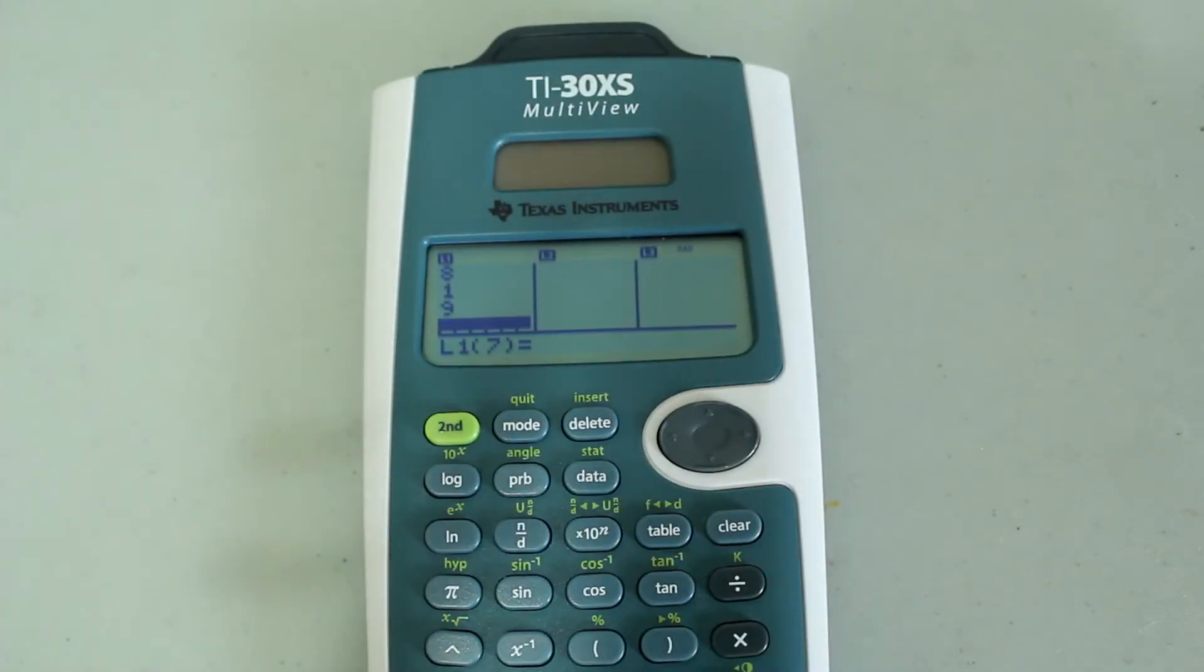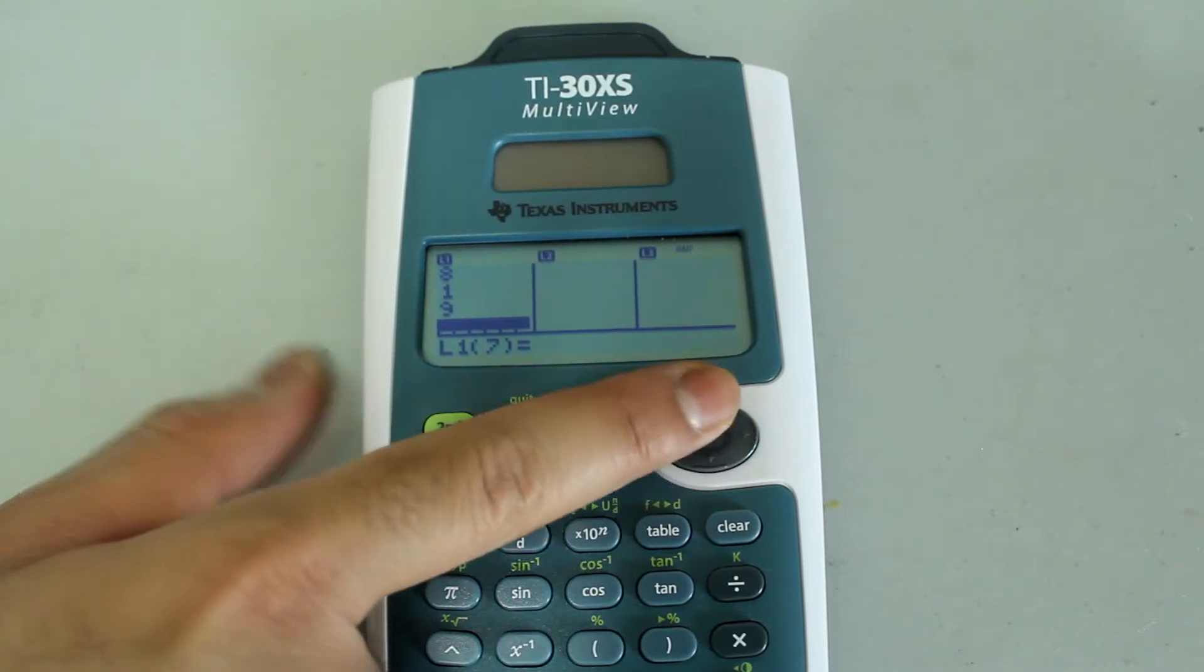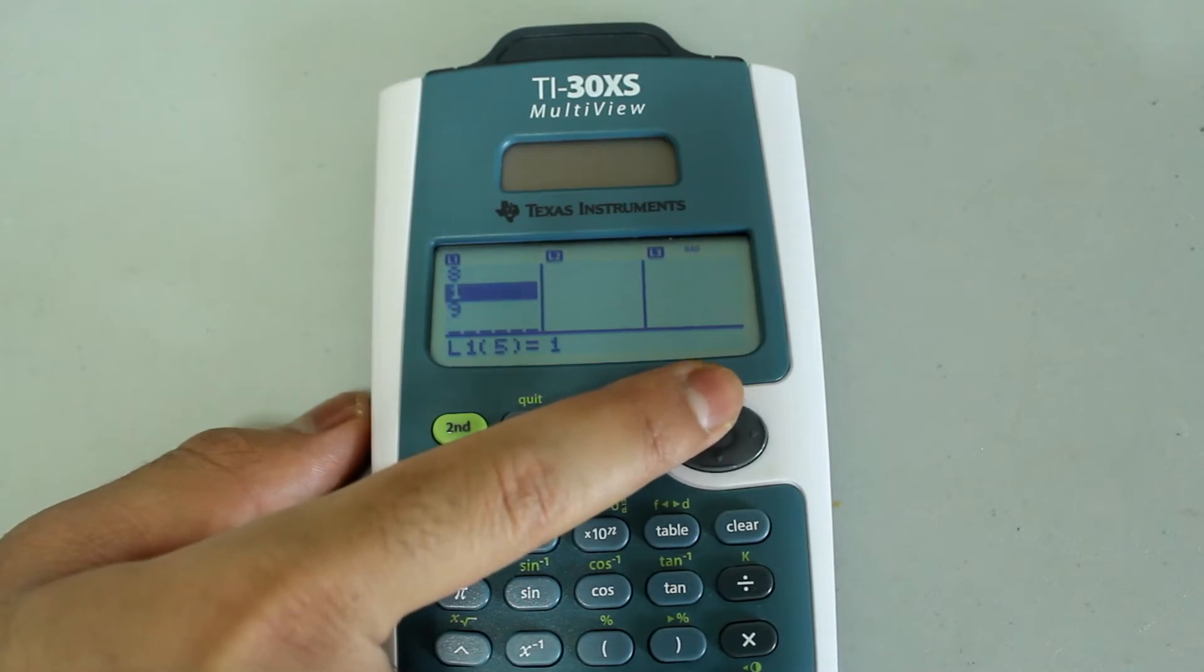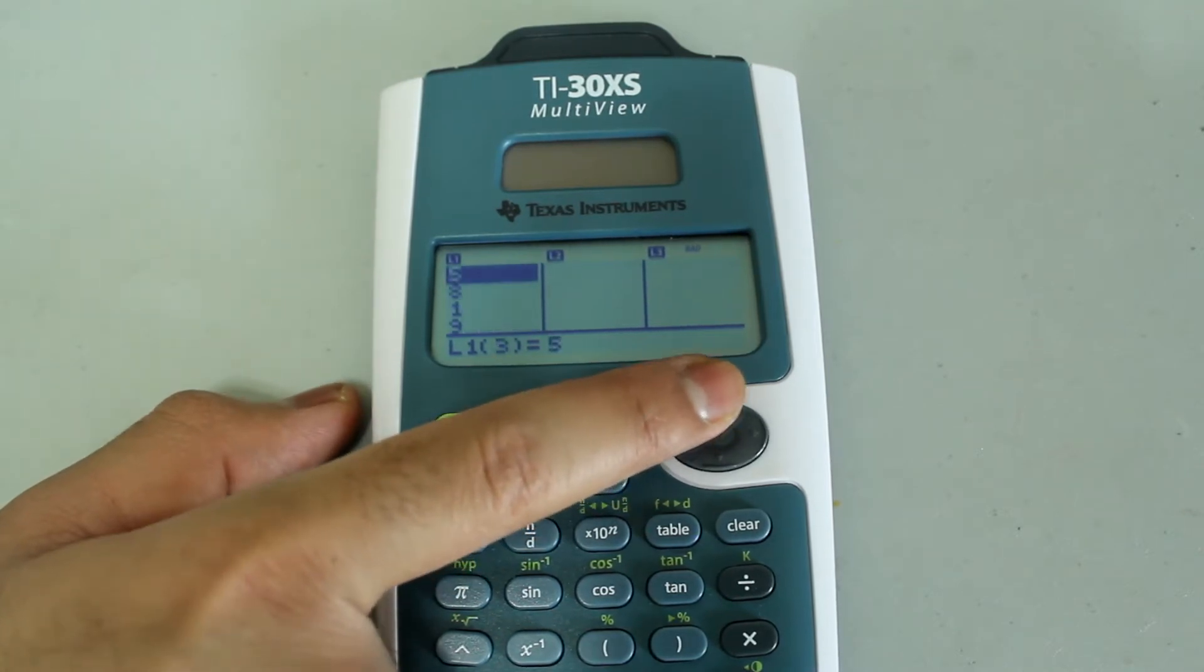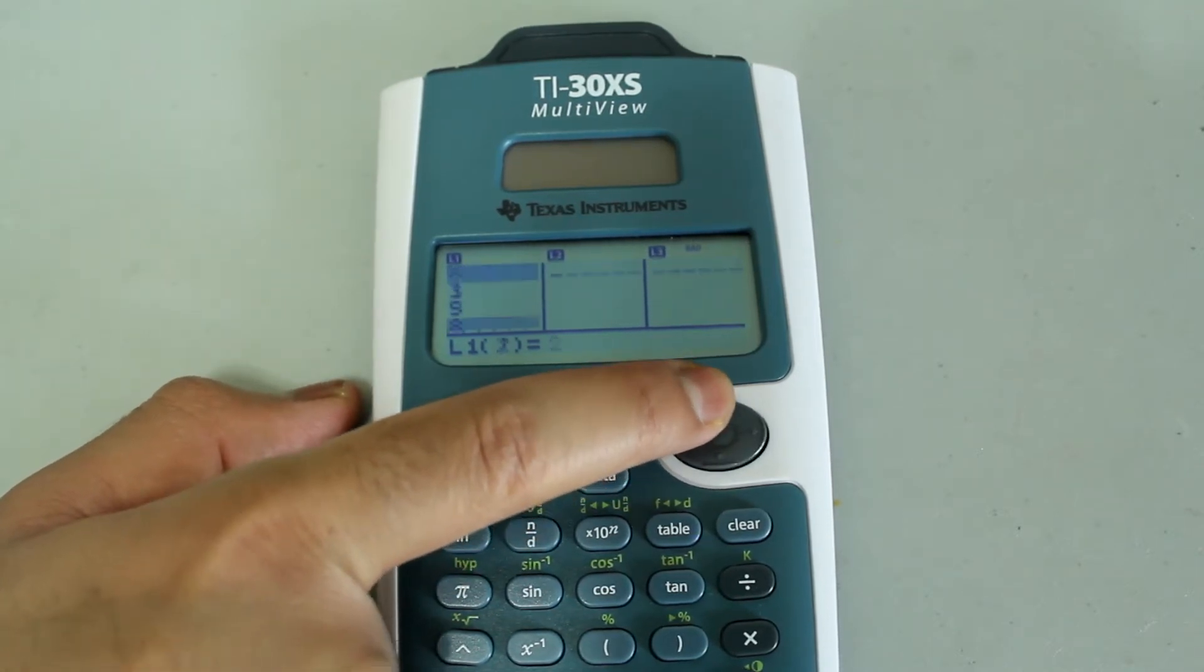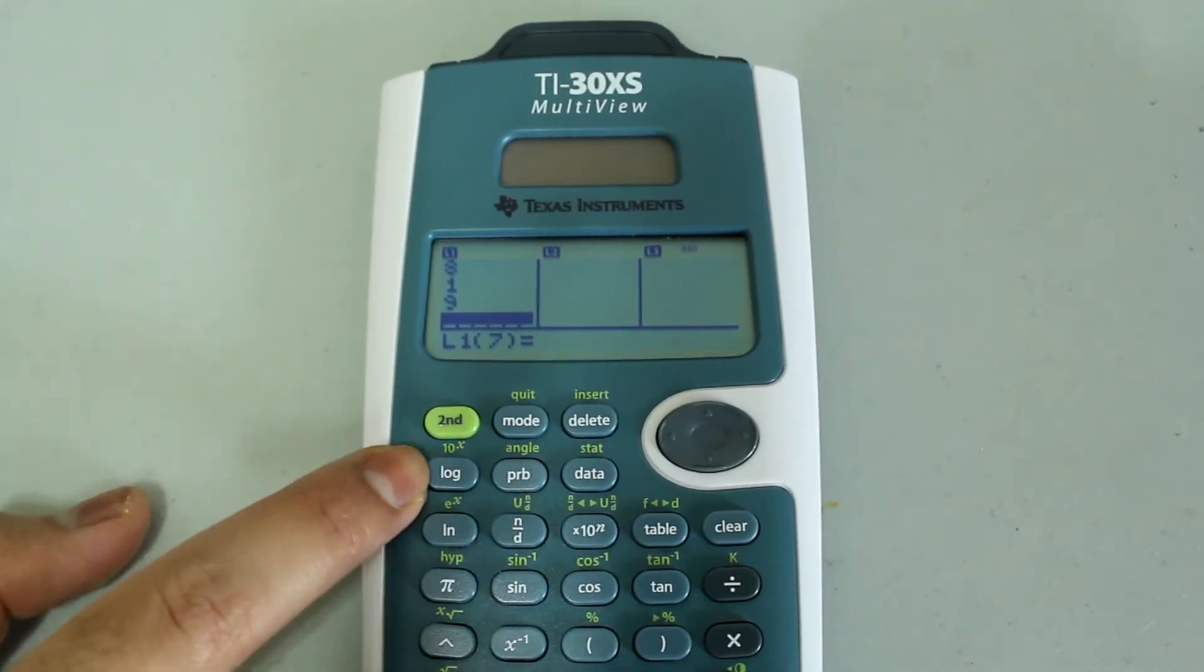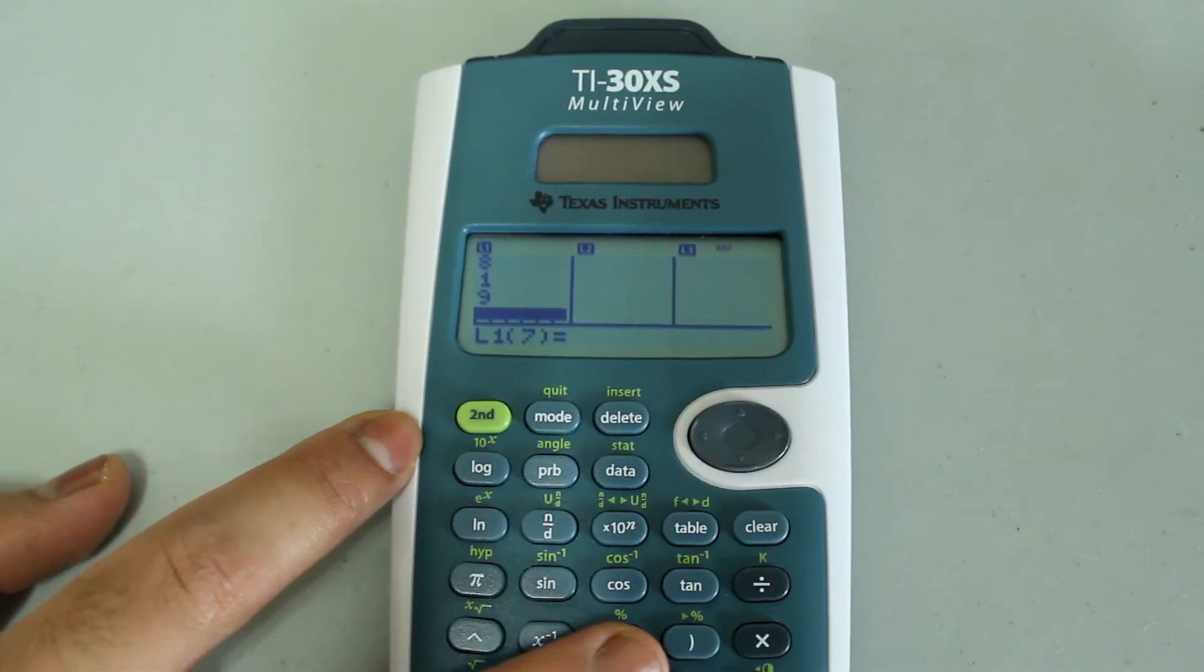After you've typed in the data points, it's usually a good idea to double check to see and make sure that there are no errors, just to make sure you haven't mistyped anything. So just arrow up and make sure that all the data points are as you want them. And it doesn't look like I made any mistakes, so I'm going to move forward with the statistical calculations.